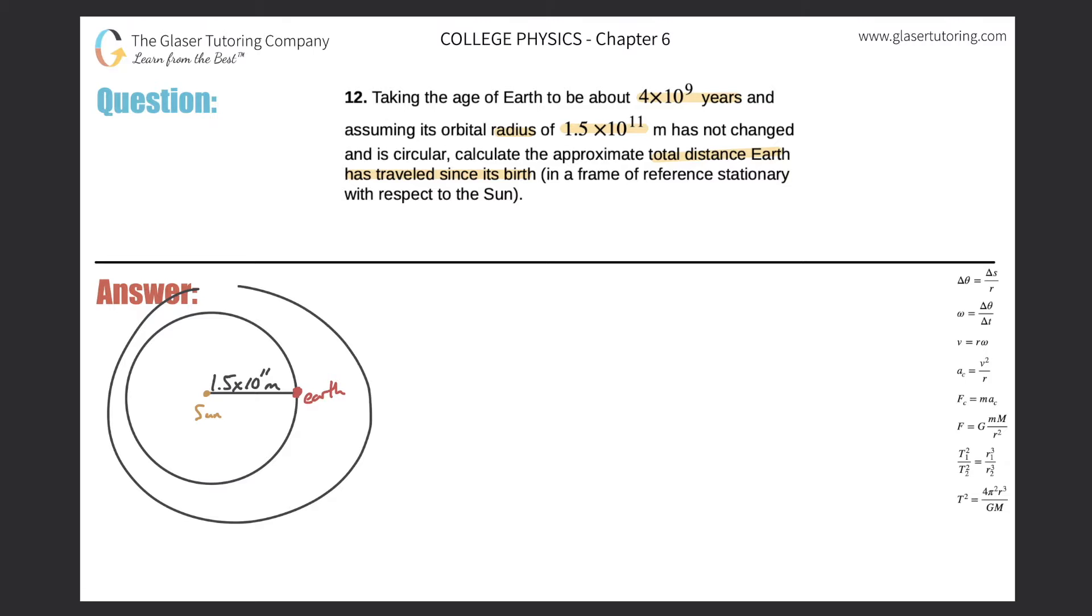Here we have a little picture. Now, what we're trying to do is we're trying to figure out the total distance that Earth has traveled. And notice that the distance that Earth is traveling is circular.